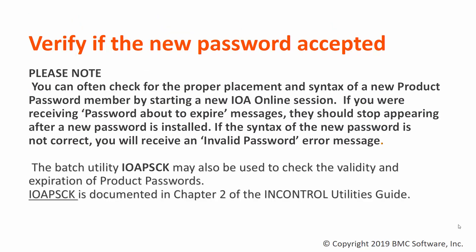How do you verify if the new password was really accepted? You can often check for the proper placement and syntax of the new product password member by starting a new IOA online session. If you were receiving a password-about-to-expire message, it should stop appearing after the new password is installed. If the syntax of the new password is not correct, you will receive an invalid password error message. There is also a batch utility, IOAPSEK, that may be used to check the validity and expiration of product passwords.